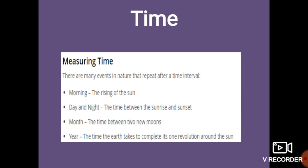Since the time our civilization began, we noticed that the sun rose in the morning in one direction and set in the evening in another direction. The ancient peoples used to perform various activities like hunting, traveling, and eating during the daytime, and they would rest at night. They did not have any knowledge about time because at that time there were no clocks.